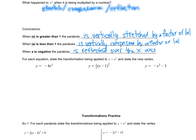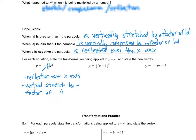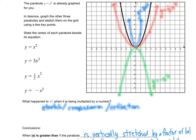We have y equals negative 4x squared. The negative tells me there's a reflection over the x-axis. Then I ignore the negative and look at the 4. That 4 is greater than 1, which means it must be stretched: vertical stretch by a factor of 4 — not negative 4. The negative told me the reflection; the 4 tells me the stretch. The vertex hasn't moved right, left, up, or down, so it stays at 0, 0 at the origin.